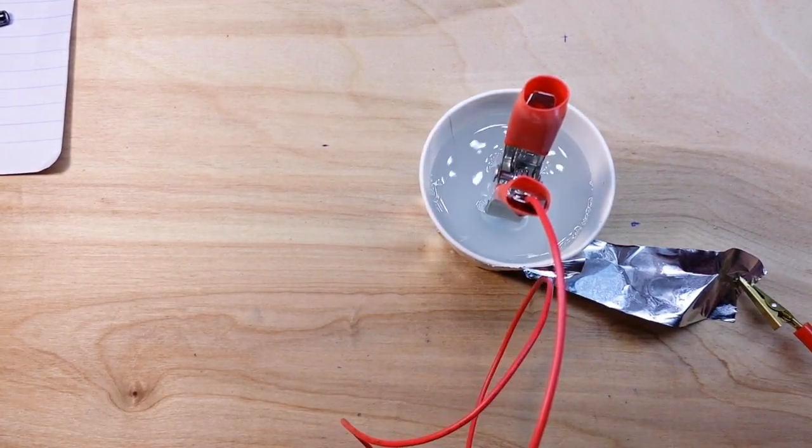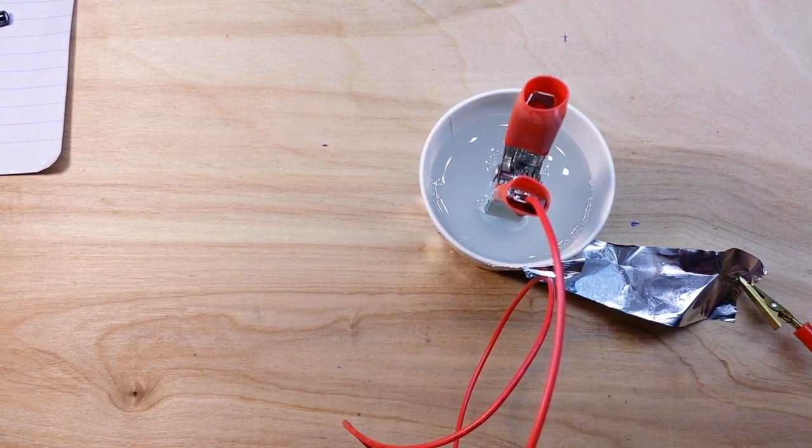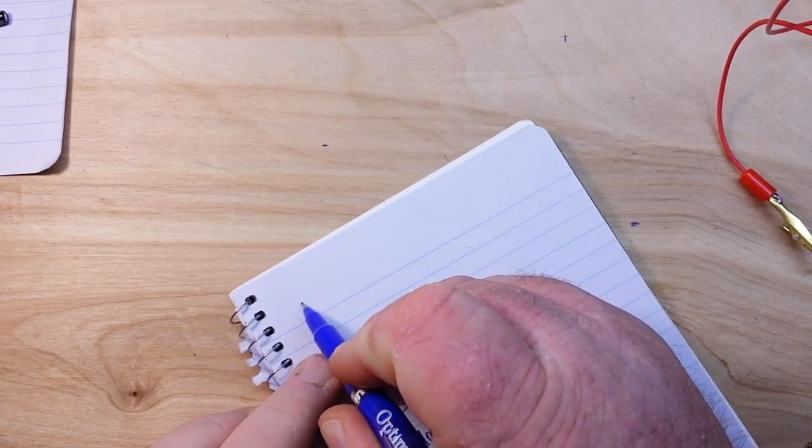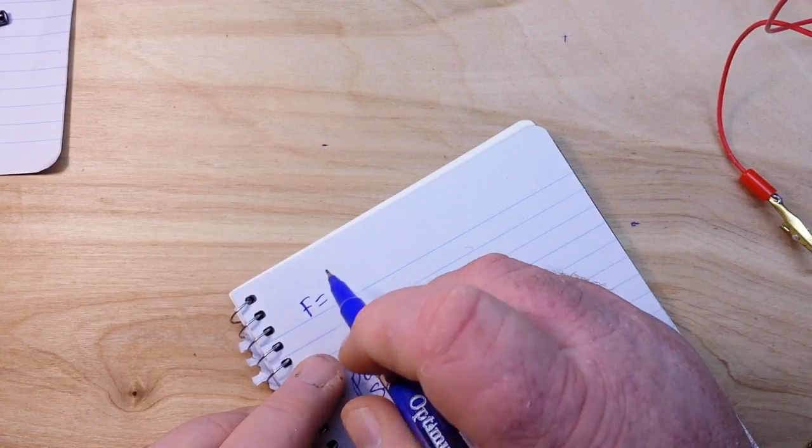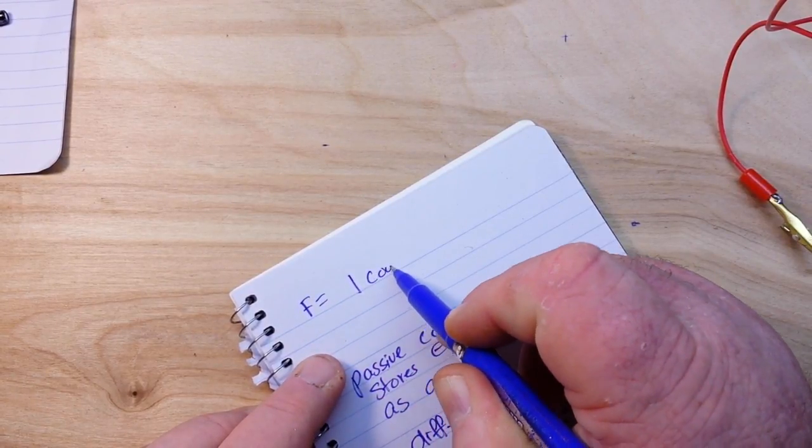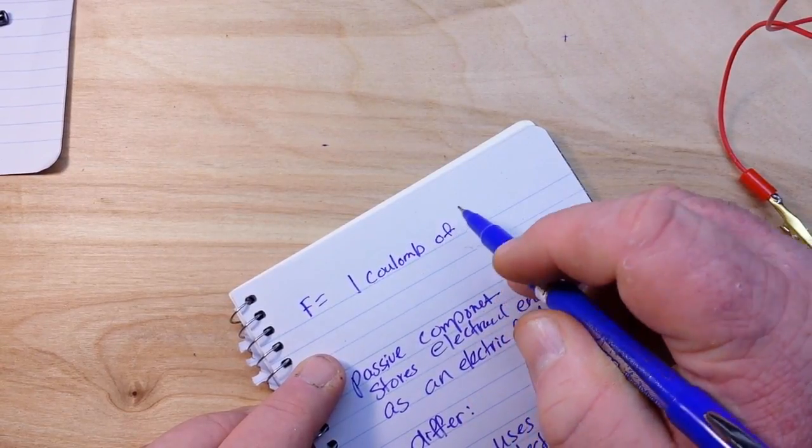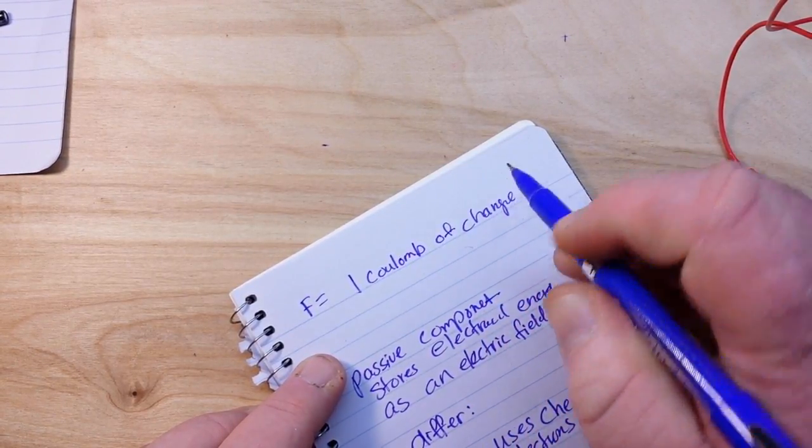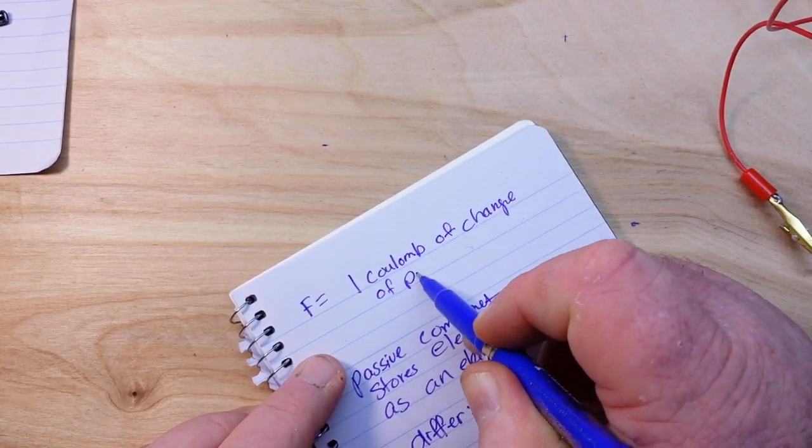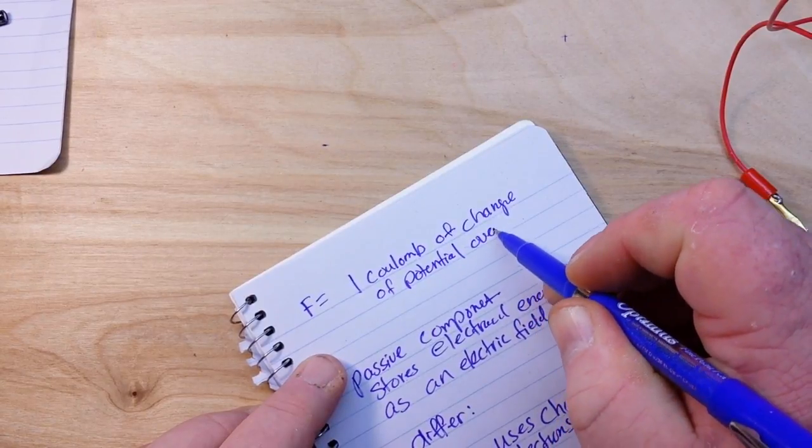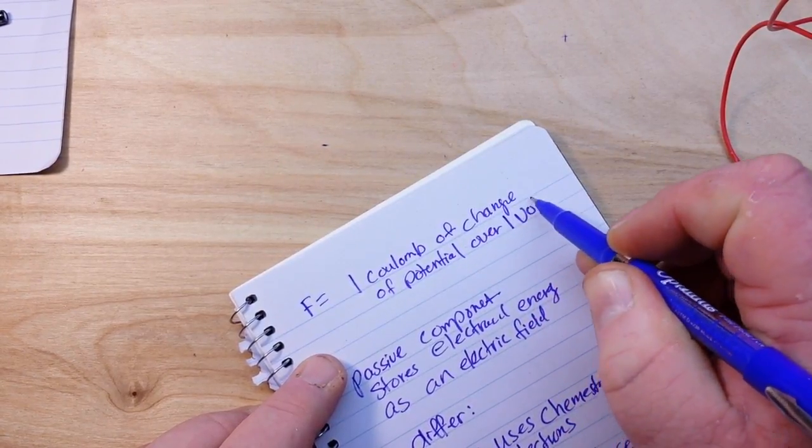So one last thing we need to talk about before we go is what's a farad. Well that's pretty simple. A farad equals one coulomb of charge of potential over one volt.